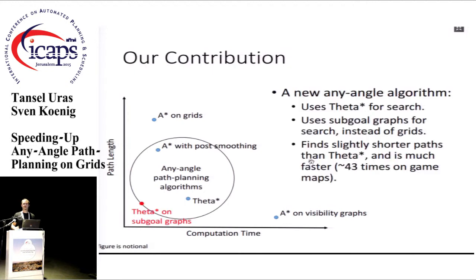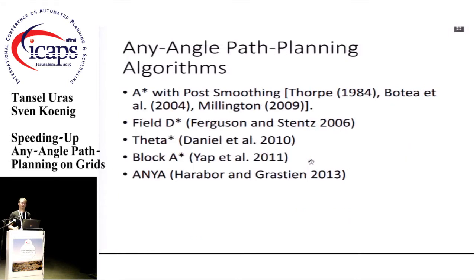Our contribution is a new any-angle path planning algorithm based on Theta star and sub-goal graphs. We use Theta star on sub-goal graphs instead of A-star, with some small modifications to the sub-goal graphs. The resulting algorithm dominates Theta star on the path length and computation time trade-off — it finds slightly shorter paths and is much faster. There are other any-angle algorithms I haven't mentioned, and I will show results comparing against them in the experimental results.